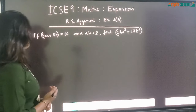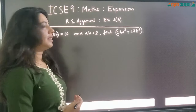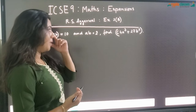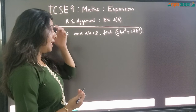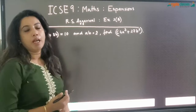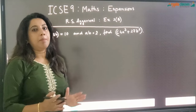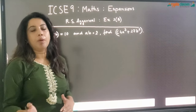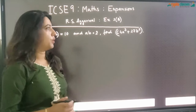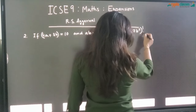Question number 2 says: if 4A plus 3B is equal to 10 and AB is equal to 2, we have to find out the value of 64A cube plus 27B cube. I hope you remember that these sums are based on A plus B whole cube and A minus B whole cube. So let me write down the formula over here.